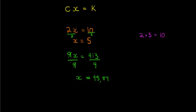The key principle is: to get rid of the coefficient, since it's multiplying x, I divide it away on both sides. If I do something on one side, I must do it on the other to keep the balance. So dividing both sides by c leaves x equal to k divided by c. Don't memorize this formula — remember the principle: do the opposite operation to get x on its own.